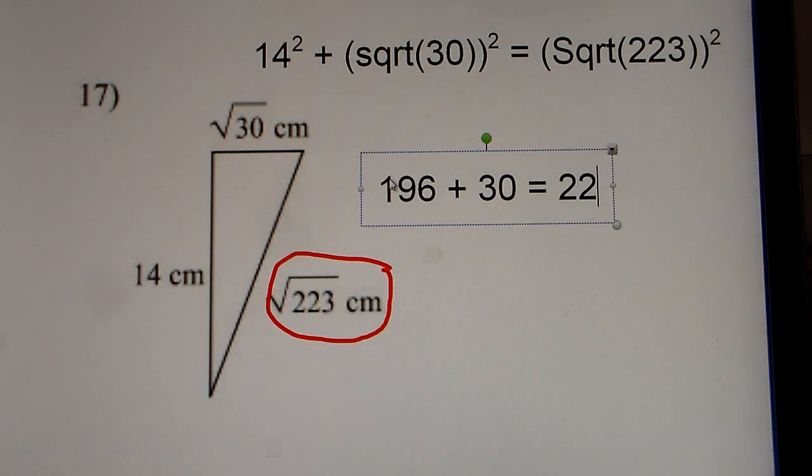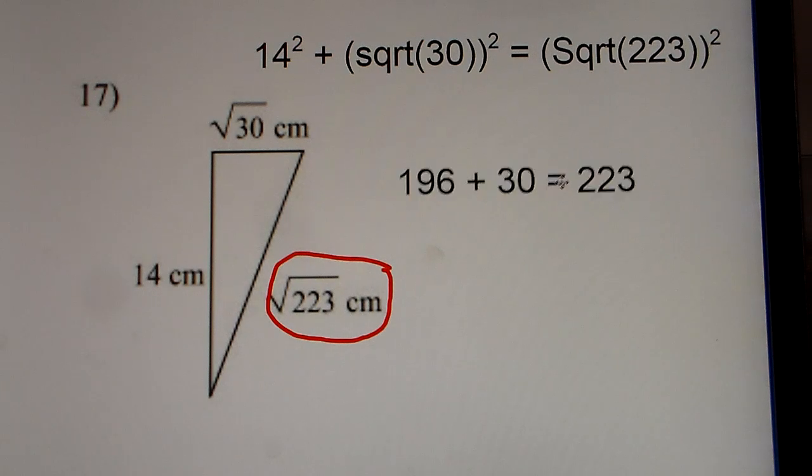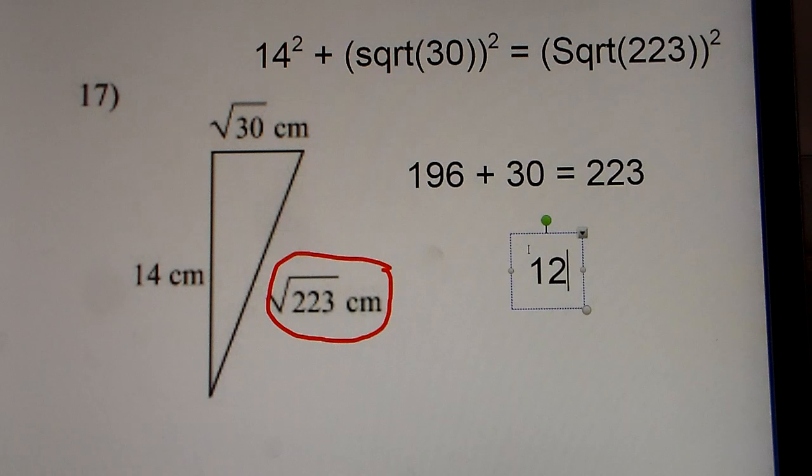223 squared gets you 223. 196 plus 30, that's going to get you 226, which is greater than 223. A squared plus B squared is bigger than C squared, so this is going to be acute.